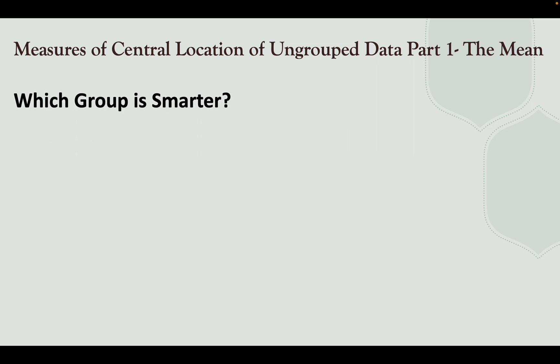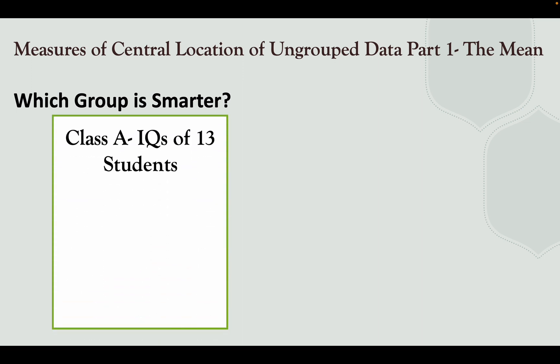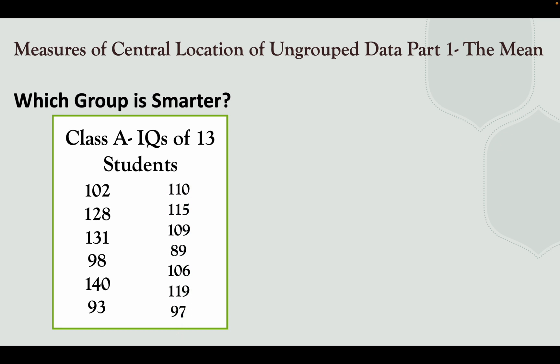So before we proceed to our main lesson, let's have an activity first: Which group is smarter? We have Class A scores of the IQ of 13 students: 102, 128, 131, 98, 140, 93, 110, 115, 109, 89, 106, 119, 97.